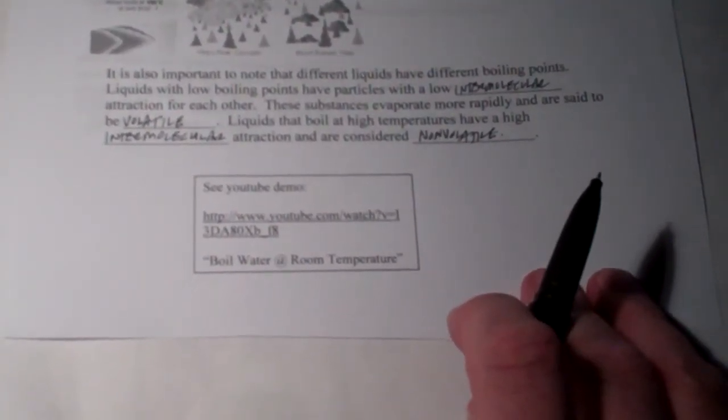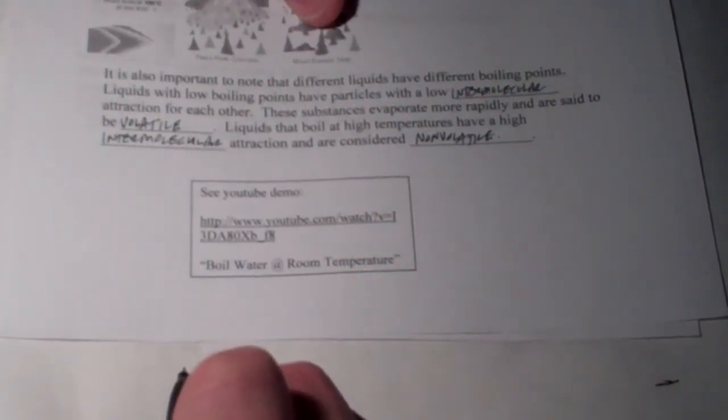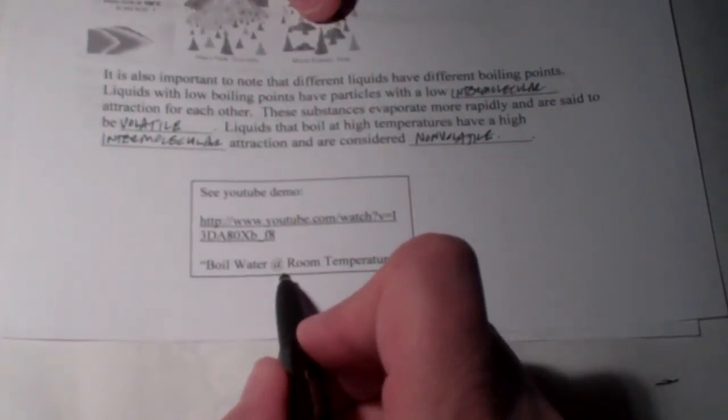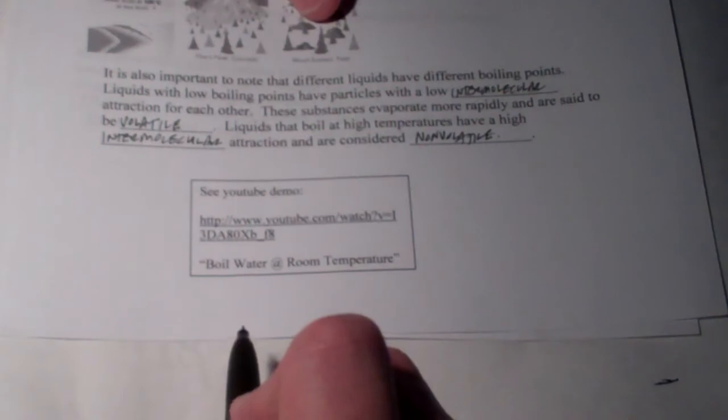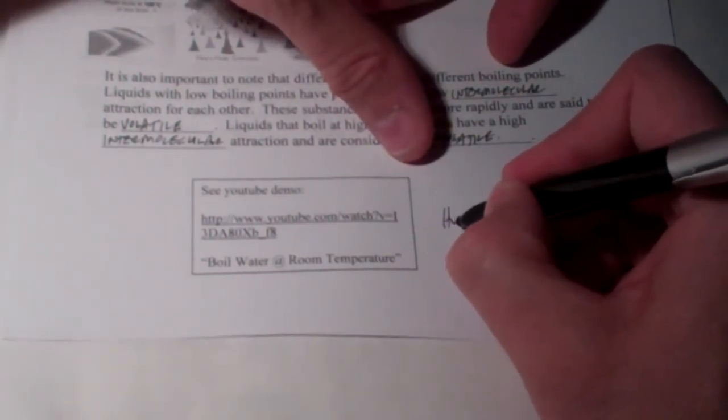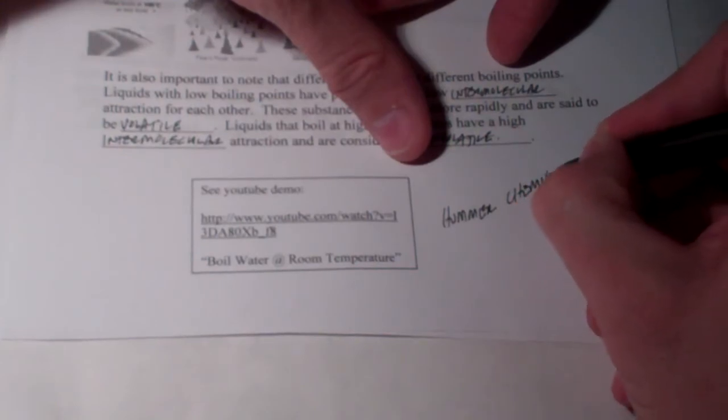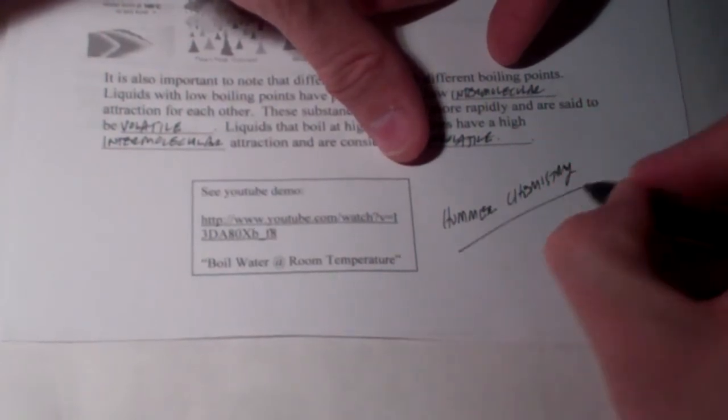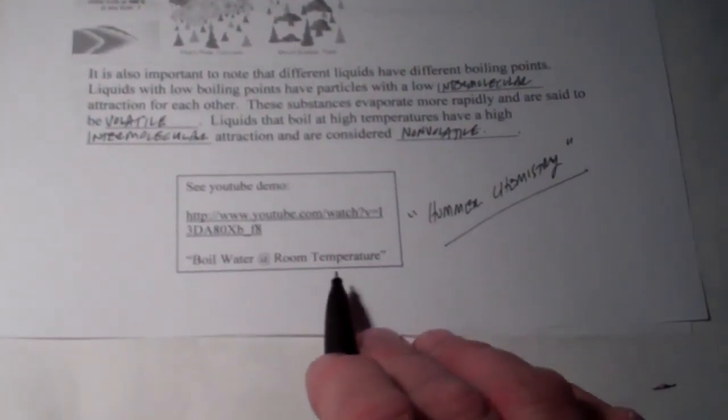Before I leave, there's a demo that I've done for you on YouTube where we boil water at room temperature. Of course, the way we do that is we reduce the pressure above the liquid. So, take a look. Search for boil water at room temperature or search for Hummer Chemistry. That's my YouTube channel. And as you search for that, you can look for boiling water at room temperature and see how we do that.